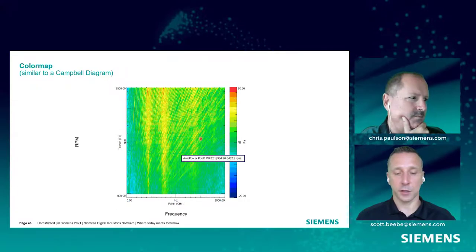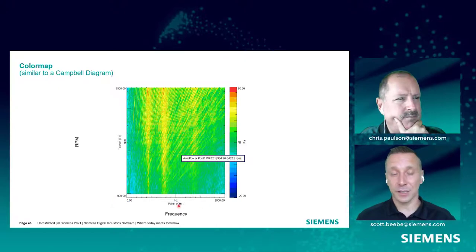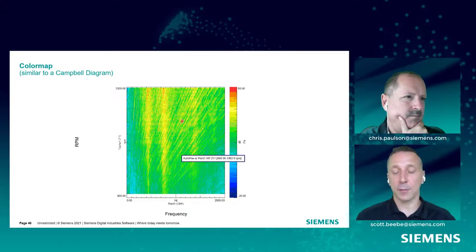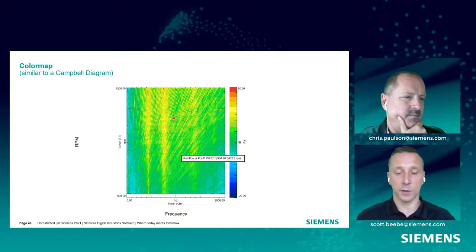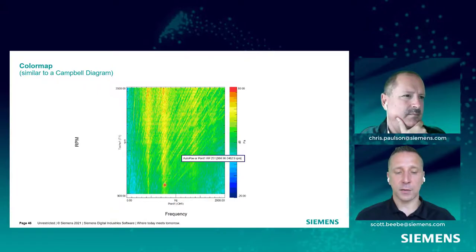This is what real-life data looks like when measuring an engine or rotating system with multiple rotating components. Here we have the RPM axis and frequency axis. It's a color map — the color represents the amplitude or height of the peaks. We sweep from 900 to 3,500 RPM, getting multiple FFTs in increments. We get an FFT at 900 RPM, at 1,000 RPM, and so forth up to 3,500 RPM. We stack those FFTs to get this color map.